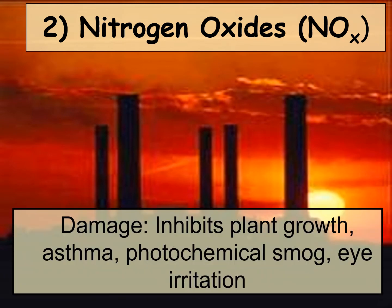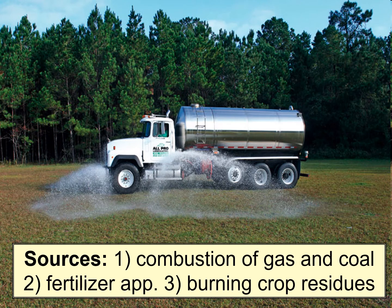The second classification of outdoor air pollutants is nitrogen oxides. They have been shown to inhibit plant growth and are a leading cause of asthma and photochemical smog — that brown haze you see in the air — and are known to irritate the eyes. Sources include the combustion of gasoline and coal, fertilizer application because it's high in nitrogen, and the burning of crop residues from farms.